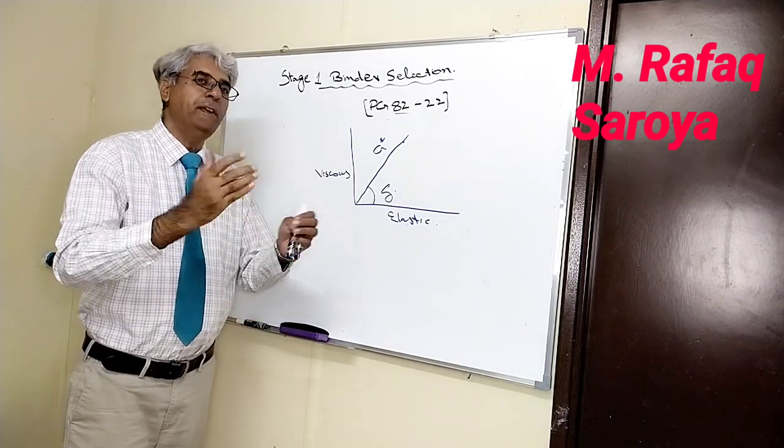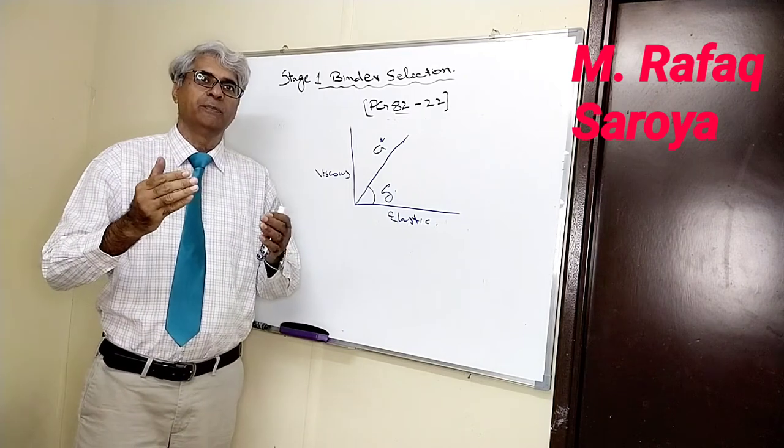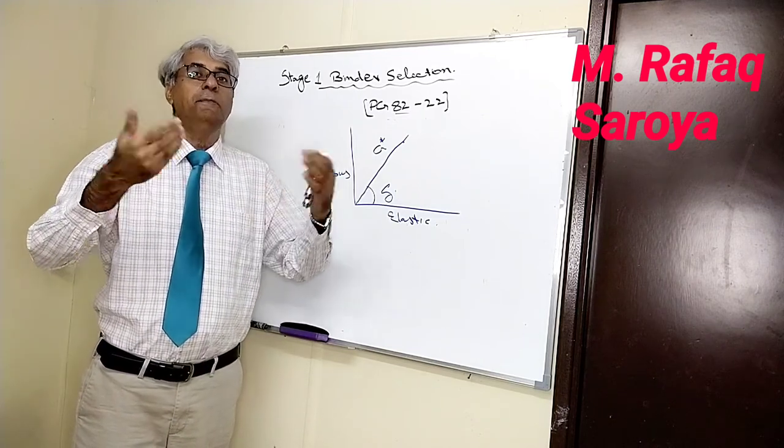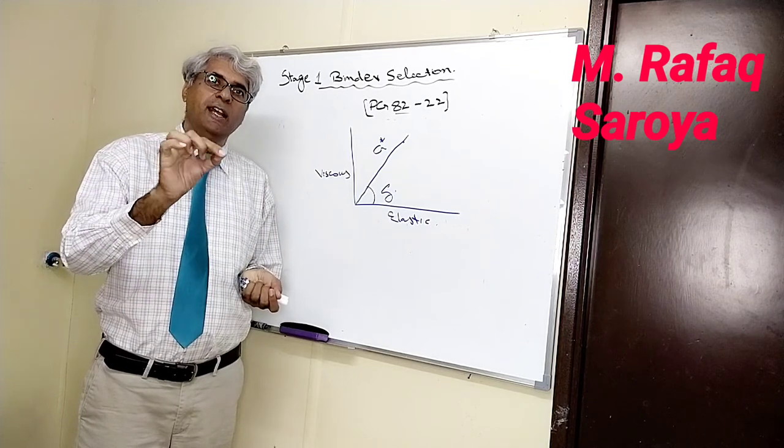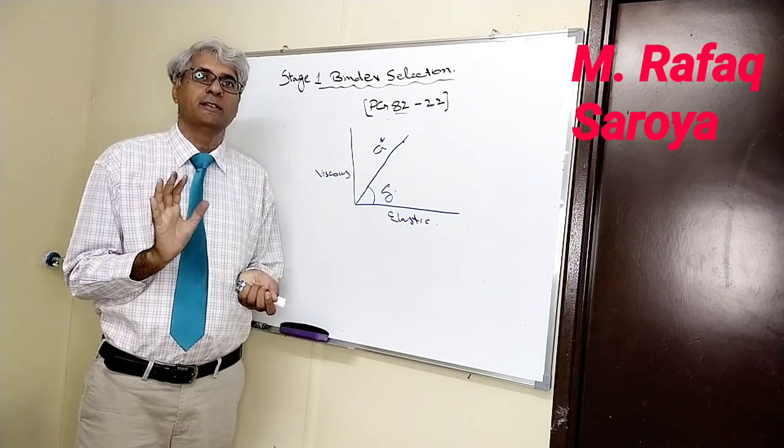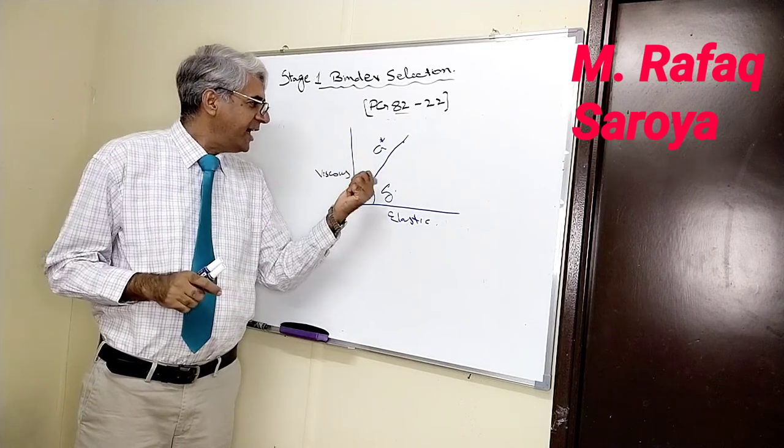You know, different people have given different descriptions, and I try to explain in easiest word as possible for your understanding. So this G star and delta